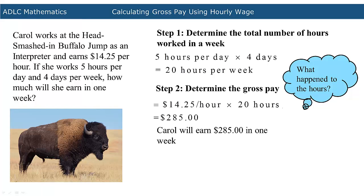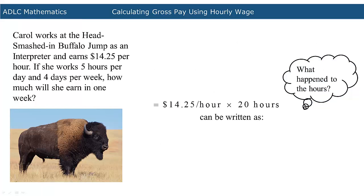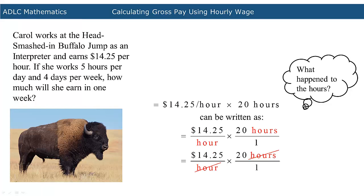You may have noticed that the equations include both dollar and hour units. So what happened to the hours? $14.25 per hour can also be written as two fractions. The numerator of the first fraction is $14.25 and the denominator is one hour. The second fraction has a numerator of 20 hours and a denominator of one. In multiplication, the unit hour appears once in a numerator and once in a denominator, so the hour units are eliminated. Using fraction multiplication to determine the total amount results in an answer of $285.